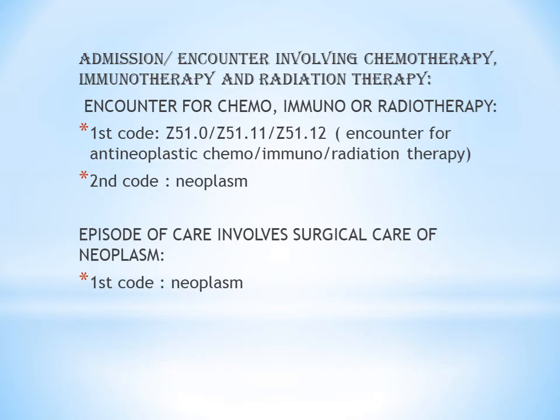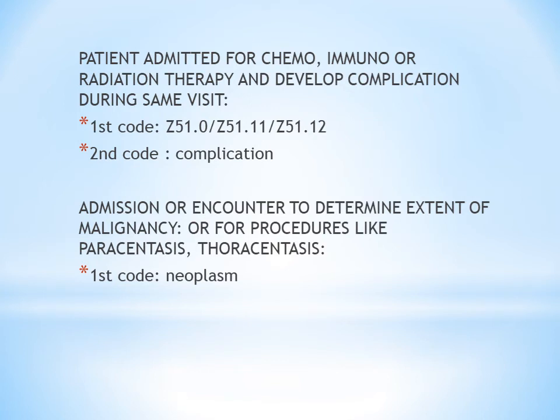The next guideline is when the episode of care involves surgical care of neoplasm. Apart from chemo, immunotherapy, and radiation therapy, surgery is also a treatment of malignancy. If the patient comes for surgical removal, there is no code for encounter for surgery, so the first code is the neoplasm code itself. To summarize: for chemo, radiation, or immunotherapy the first code is Z51; for surgery the first code is the neoplasm code.